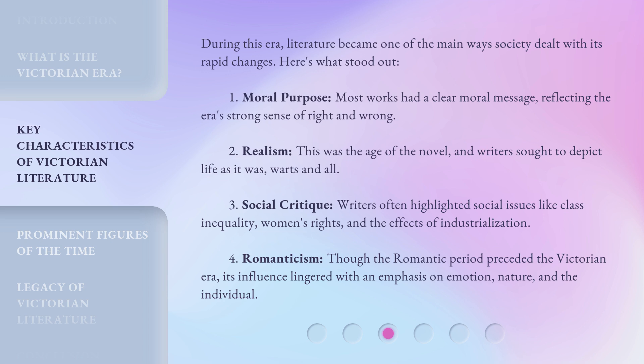During this era, literature became one of the main ways society dealt with its rapid changes. Here's what stood out: 1. Moral Purpose — most works had a clear moral message, reflecting the era's strong sense of right and wrong. 2. Realism — this was the age of the novel, and writers sought to depict life as it was, warts and all. 3. Social Critique — writers often highlighted social issues like class inequality, women's rights, and the effects of industrialization.